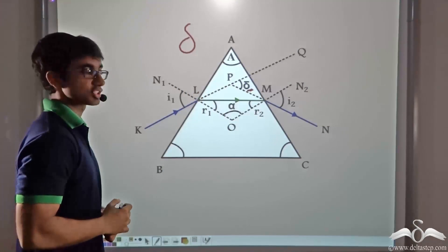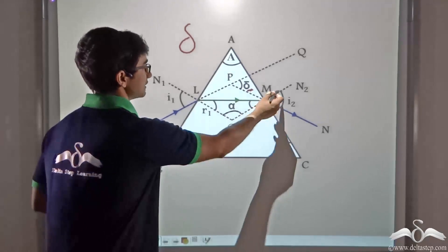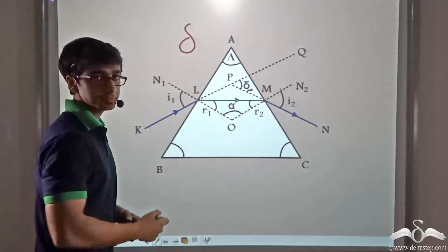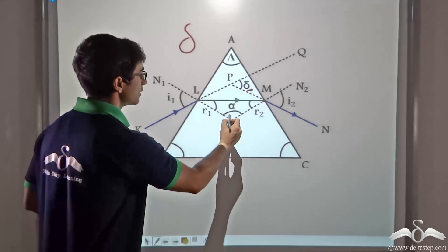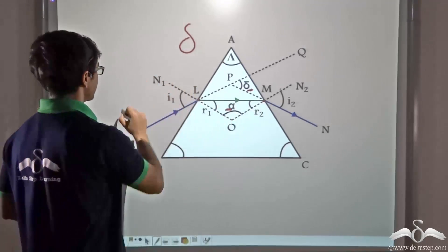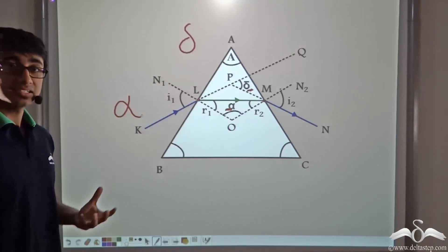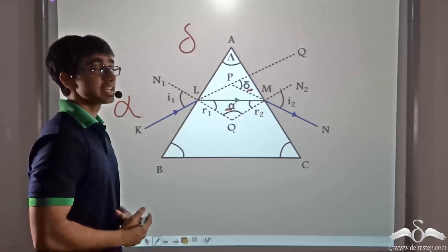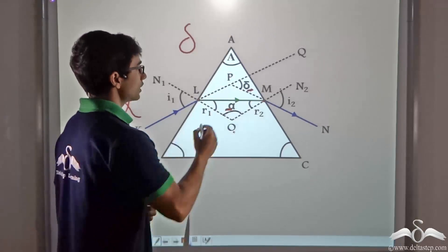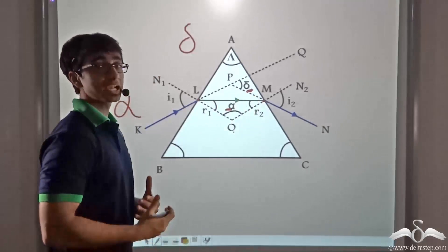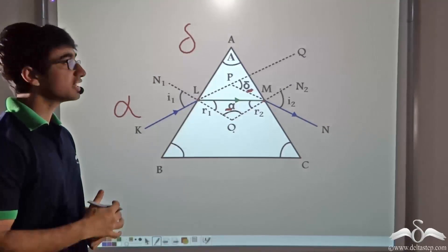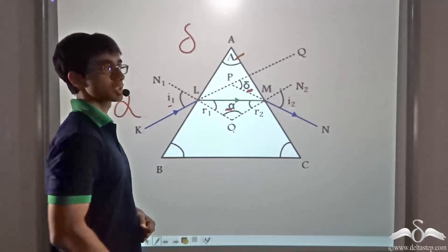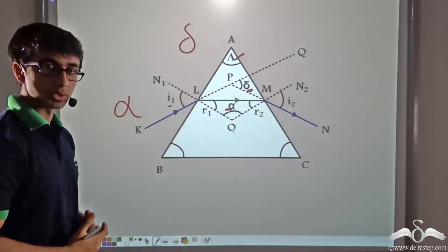If you observe closely, the angle that the two normals at the points of incidence are making is given by angle alpha. Angle alpha gives us the angle that the two normals are making inside the glass prism. Now we have to find out what delta, or the angle of deviation, is if we are given the angle of incidence and the angle of prism.